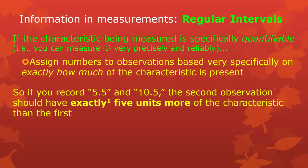So if you record that one worm is 5.5 inches long and another worm is 10.5, then one of those worms has exactly five inches more of length. Length — inches is an arbitrary unit, but that's okay. It's a very measurable, very quantifiable arbitrary unit. That second worm has exactly five inches more in its length than the first one does.